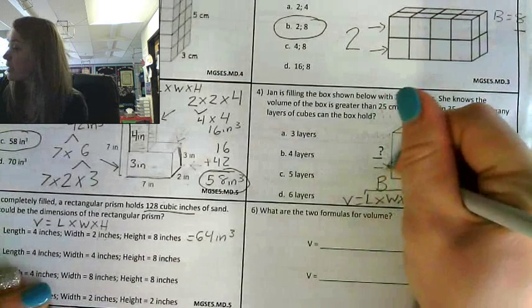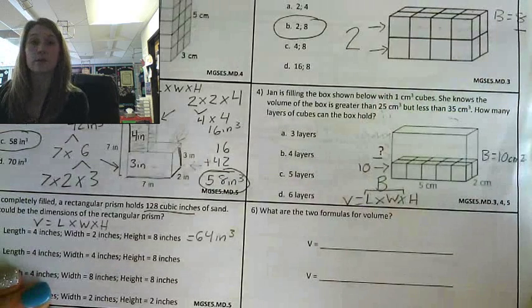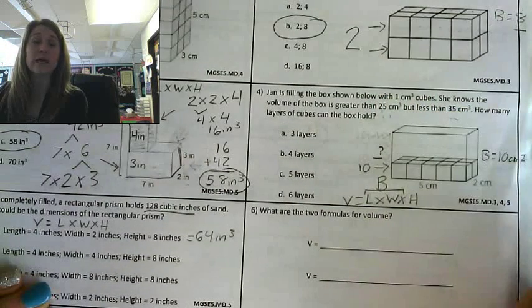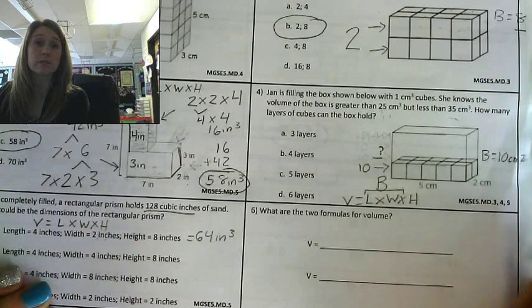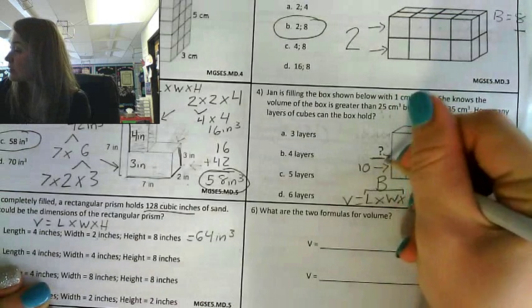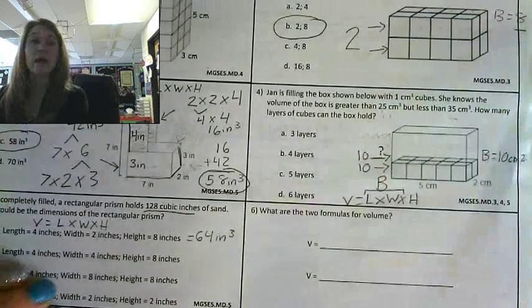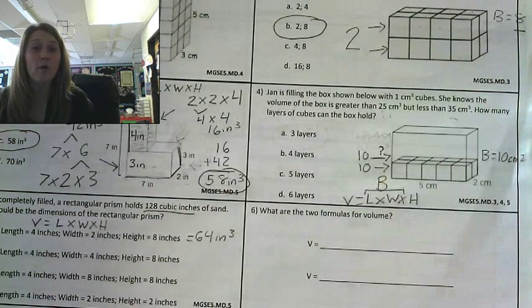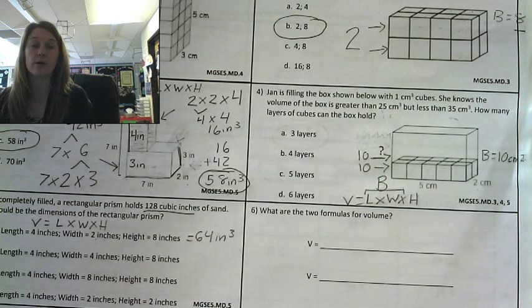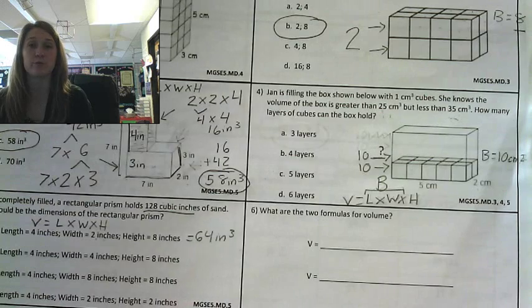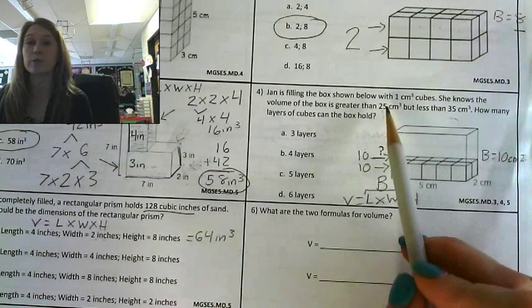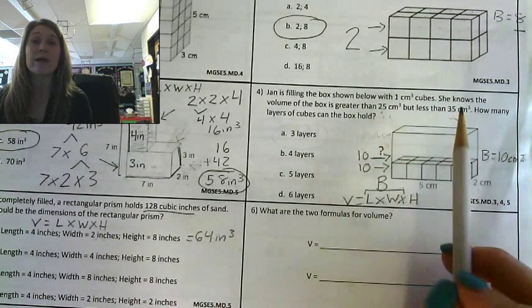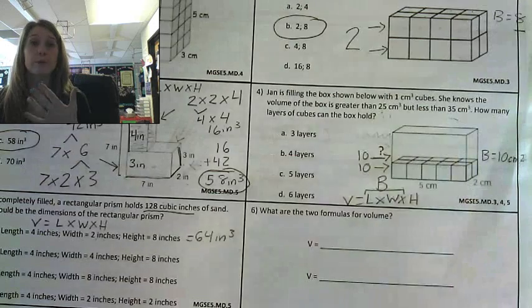So this first layer right here has 10 cubes. The volume of the first layer is 10 cubic centimeters. What if I go to the next layer? The next layer would be another 10. So now my total figure volume would be 20 centimeters cubed. But I'm looking for a volume between 25 centimeters cubed and 35 centimeters cubed. So I need to keep going.